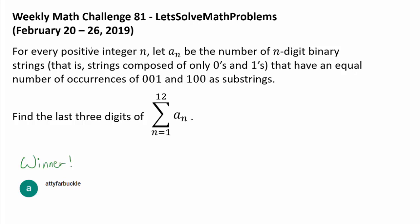For every positive integer n, let a_n be the number of n-digit binary strings (that is, strings composed of only zeros and ones) that have an equal number of occurrences of 001 and 100 as substrings. We wish to add up a_n from 1 to 12 and find the last three digits of the sum.